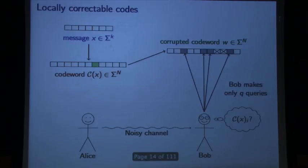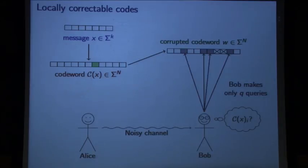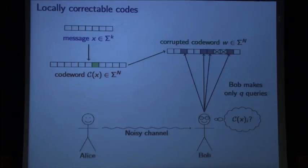Locally correctable codes is the same question, except now you want a symbol of the uncorrupted code word, and you want to be able to get this from reading only a small number of symbols of the corrupted code word. We're going to talk about these locally correctable codes here.